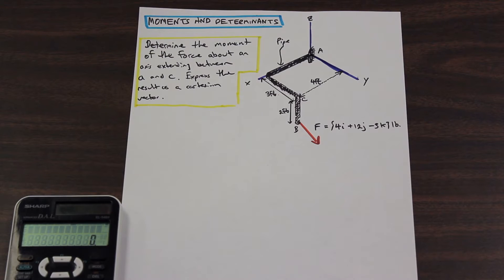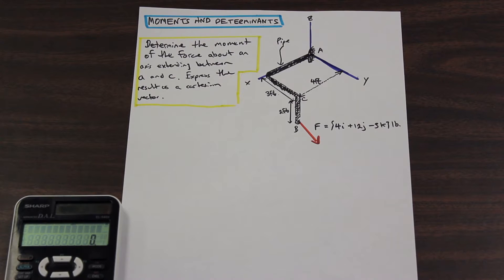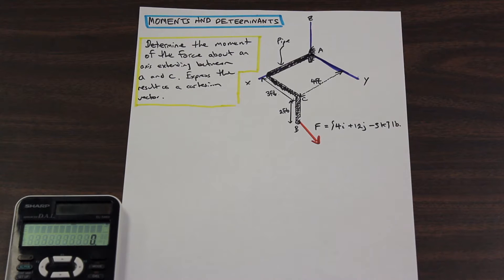Hi guys, how's it going? Fred here, AF Math and Engineering. We are going to take a look at using determinants and cross products in order to find the resultant moment on a specific axis of interest.